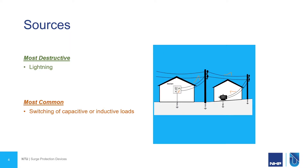The most common type of surge seen on a network comes from switching of capacitive and inductive loads — things like DOL starters, welders, switching of capacitive banks. Electrical accidents on the network can all cause a spike in voltage, as can things like cloud-to-cloud lightning.